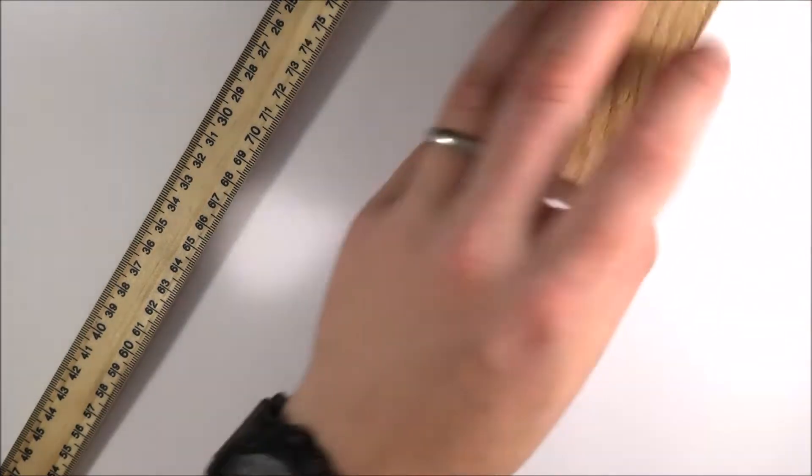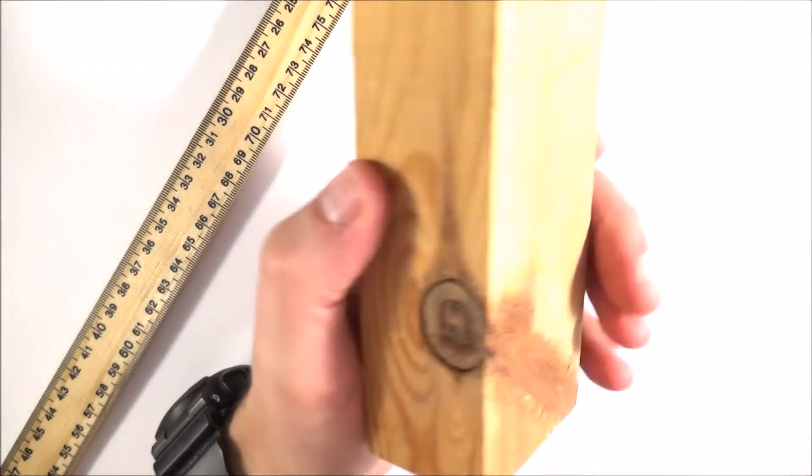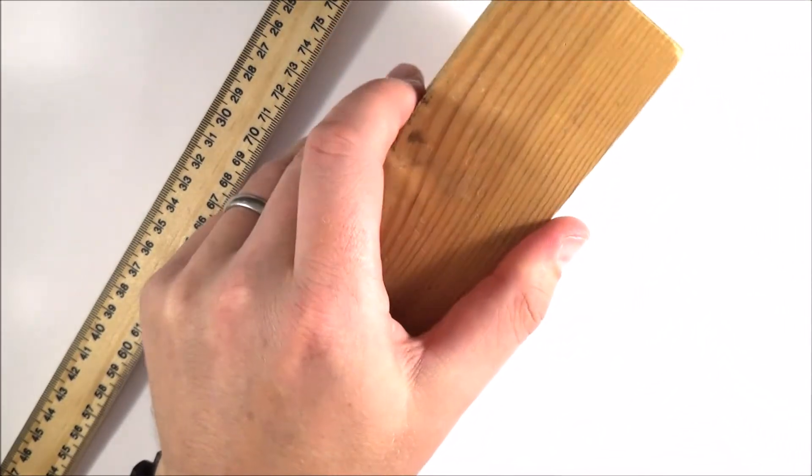But how do you measure the velocity? Because we can't just do speed equals distance over time because we've got a deceleration due to the friction on the ground, and to do that we use a light gate.